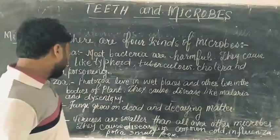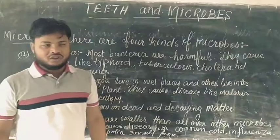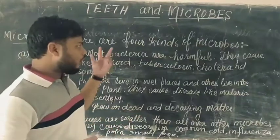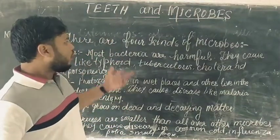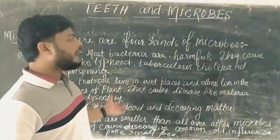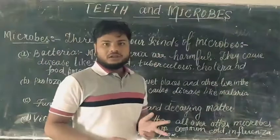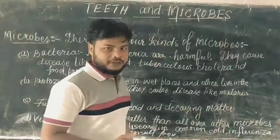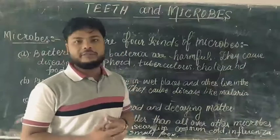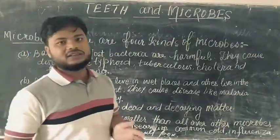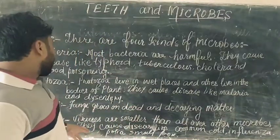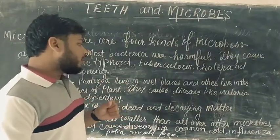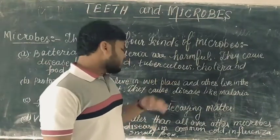Viruses are very small in size compared to all other microbes — they are the smallest of the four types. They are also the most dangerous and cause diseases like the common cold, influenza, polio, and smallpox.